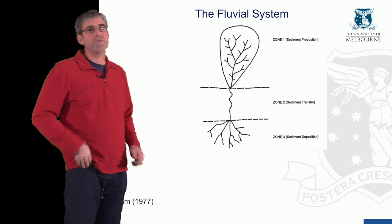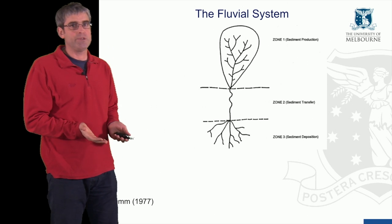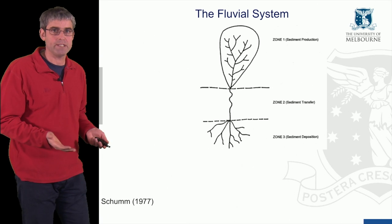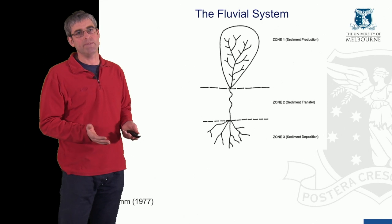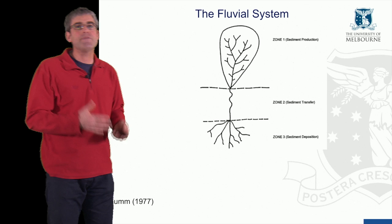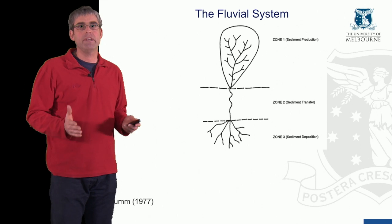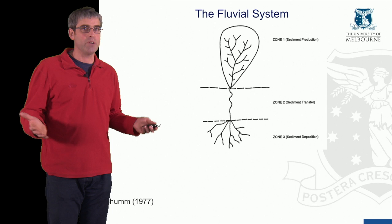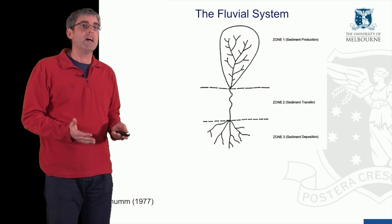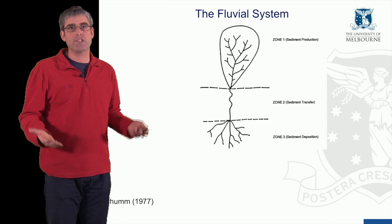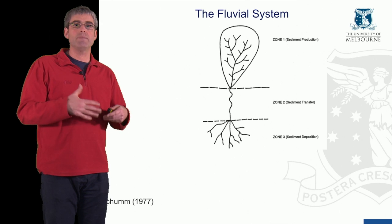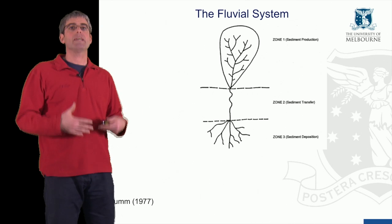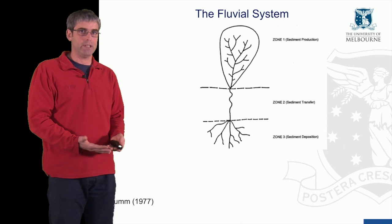A useful framework to think about this catchment context is the fluvial system concept introduced by Stanley Schumm in 1977. He defined within a catchment three distinct zones. Firstly, Zone 1 — the headwater or upland zone — which is the sediment production zone. In this area, streams are eroding into the surrounding material and supplying sediment to the river channel network.